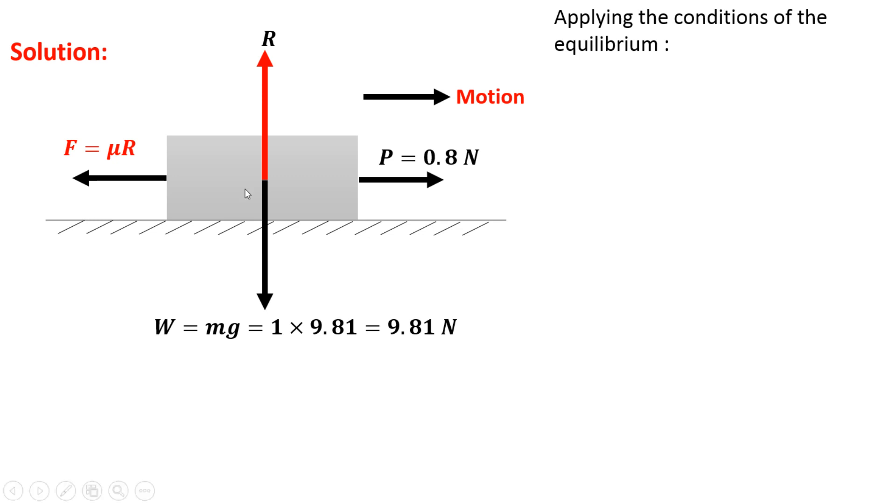Now we will apply the conditions of equilibrium. First condition of equilibrium is summation of forces in x direction is equal to 0. Forces towards right are considered as positive, whereas forces towards left are considered as negative. So P is in the positive x direction, and F is in the negative x direction. So P minus F is equal to 0, or P is equal to F. And we know that F is equal to mu R. Let us call this equation number 1.